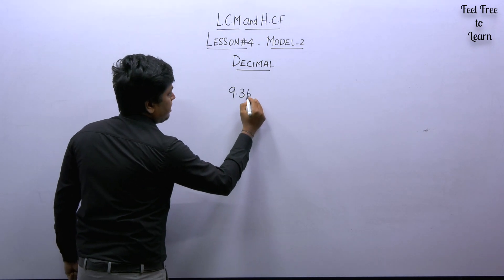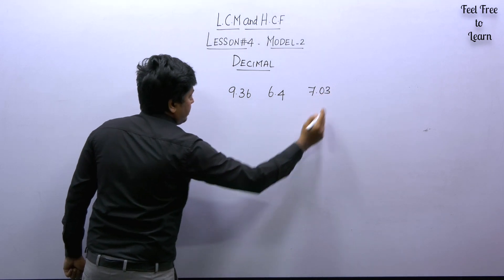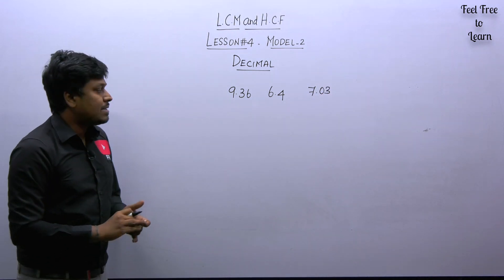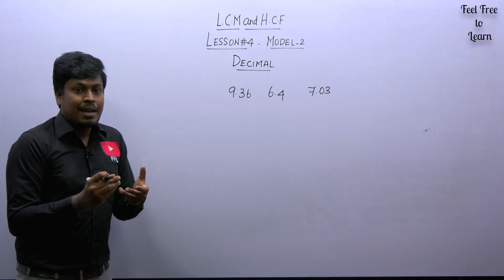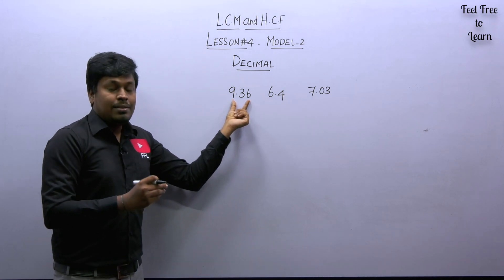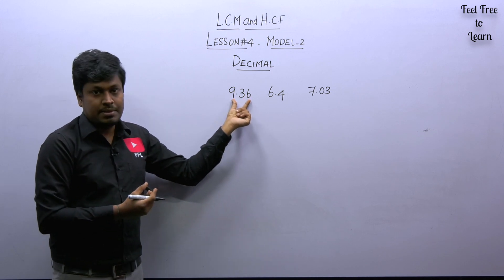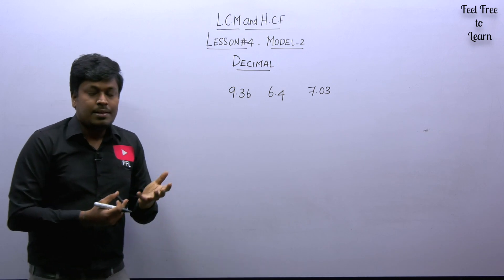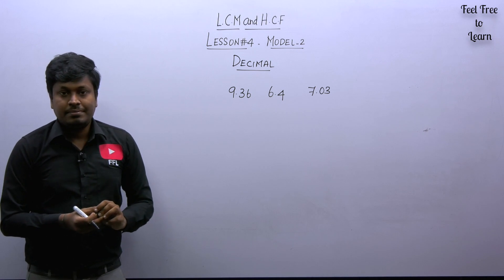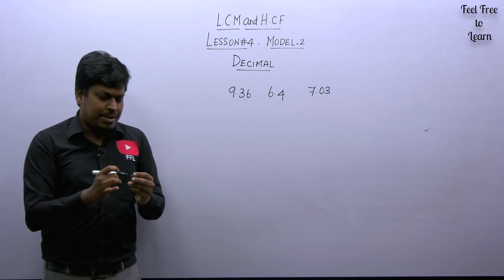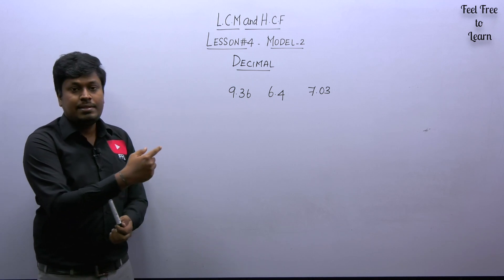For example, take the numbers 9.36, 6.4, and 7.03. How do we find LCM for these numbers? You can see the numbers are not fractions, not whole numbers — they are decimal numbers. We are going to learn how to find LCM when the given numbers are decimals. There is an easiest trick — using this trick you can easily find the LCM.